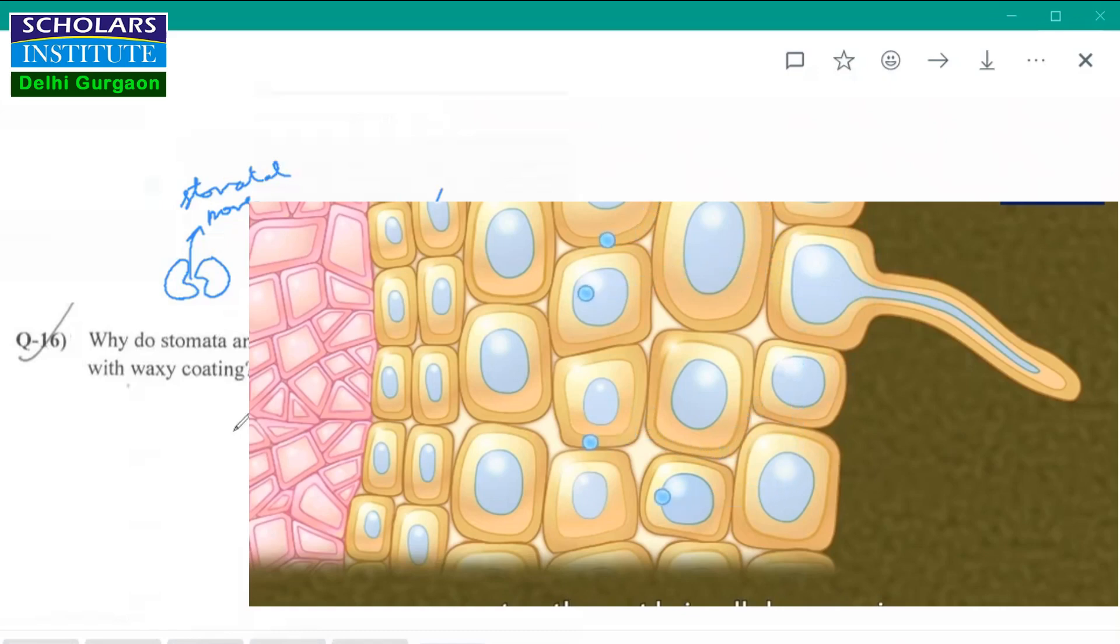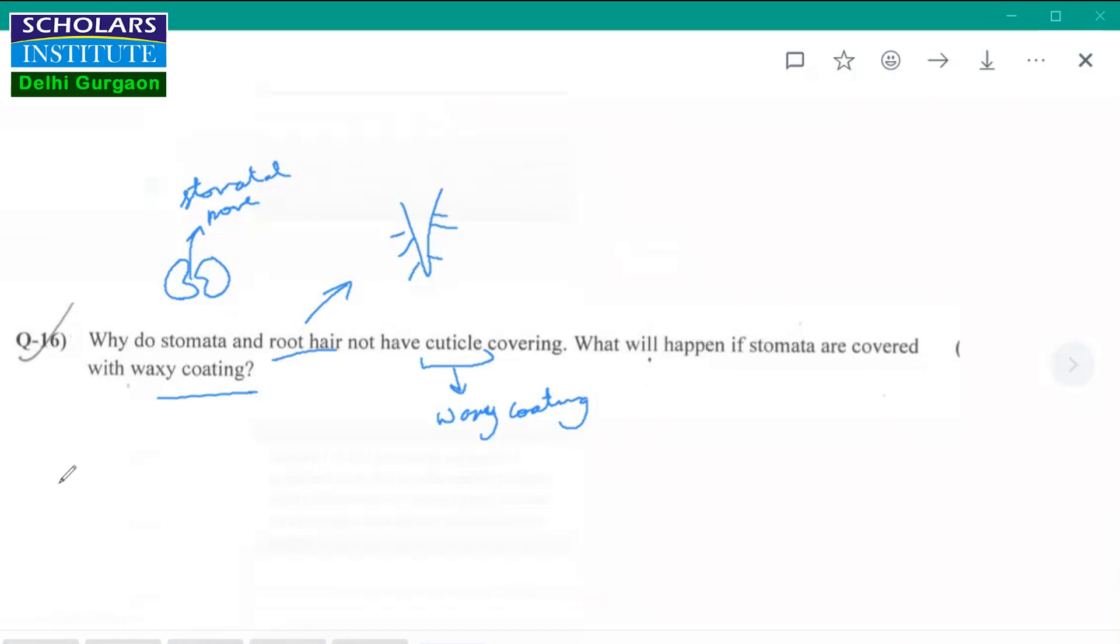Now the next part of the question is, what happens if stomata are covered with waxy coating? If stomata is covered with waxy coating, just like we talked about, not cuticle, if it is covered with waxy coating, then the stomata will get blocked. And once, if they are blocked, say suppose you take petroleum jelly, that is Vaseline and cover it, leaf with it.